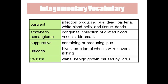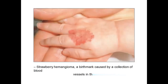Laceration is a torn or jagged wound. Macule is a flat or discolored spot on the skin. Nodule is a solid mass larger than 0.5 centimeters. Papule is a small spot smaller than 0.5 centimeters — if smaller than 0.5 cm we call it papule; if larger than 0.5 cm it is a nodule.